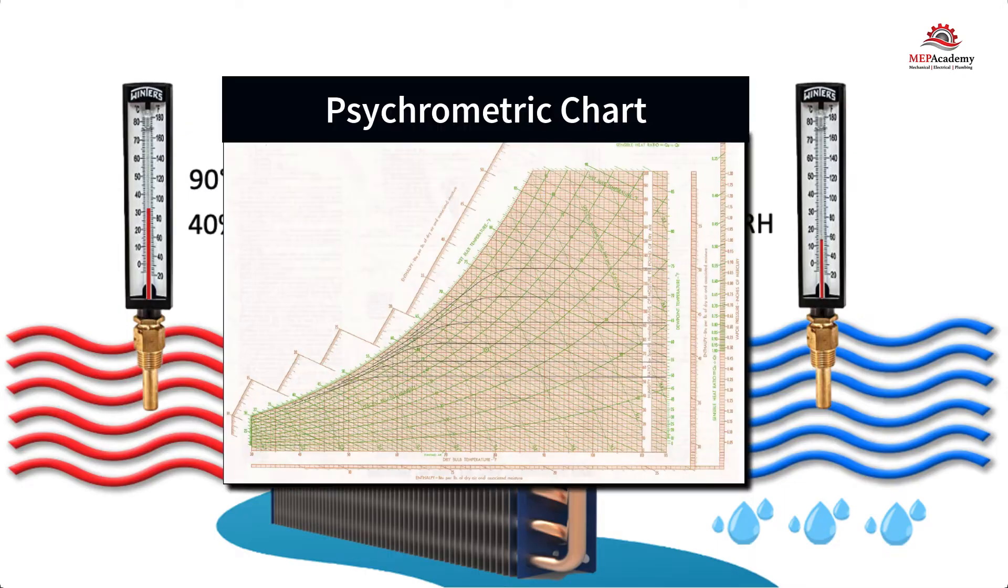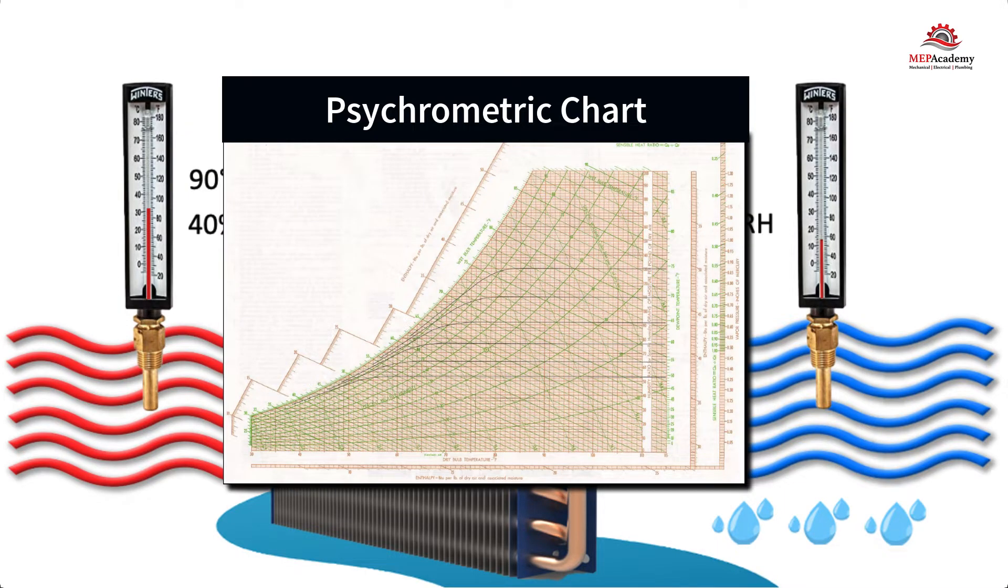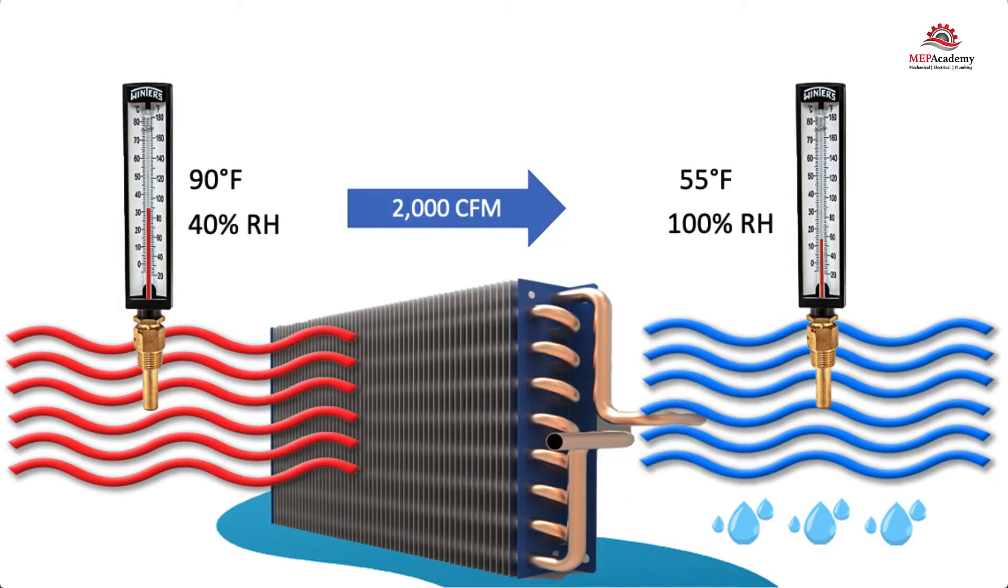We'll need to look at a psychrometric chart to gather the information needed for this calculation. This is also easily done using software, but it's best to know how the software arrives at these values.